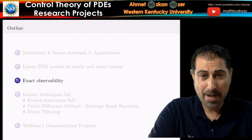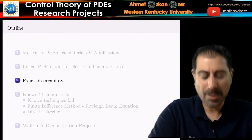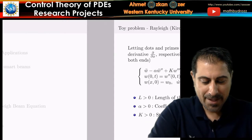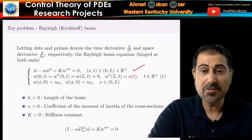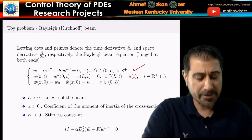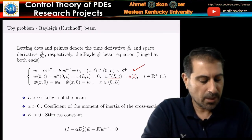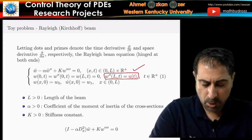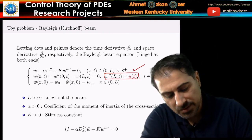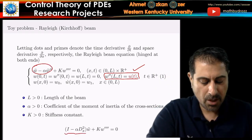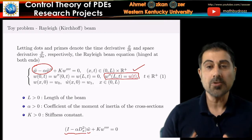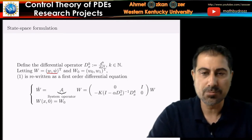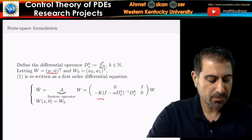Next I'm going to pick the Rayleigh beam model and show you an important control-theoretic property called exact observability. We take the Rayleigh beam equation with hinged boundary conditions. One boundary is controlled by a controller u(t), controlling the moments at the tip of the beam. We rewrite using an operator to convert this into first-order form, choosing states W and its time derivative to obtain the system operator.